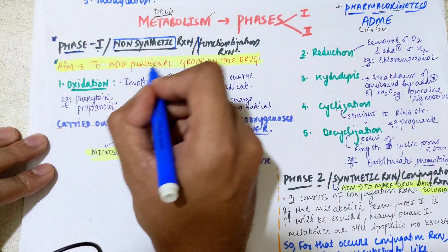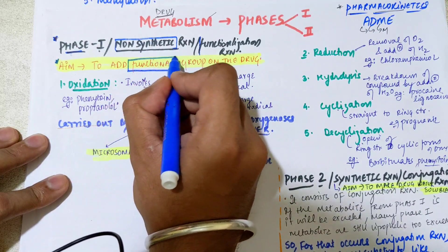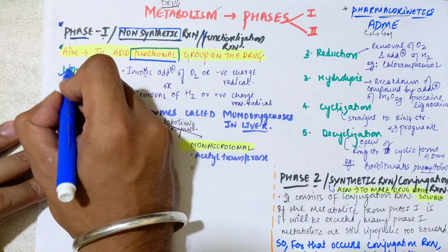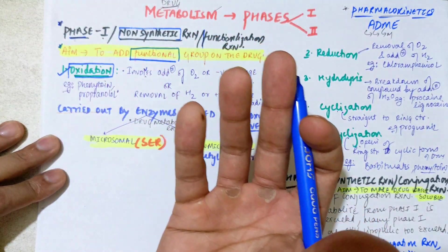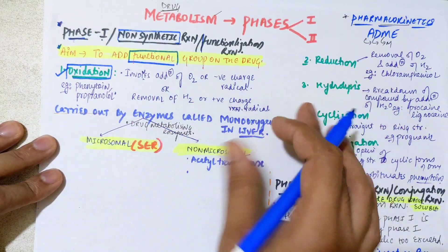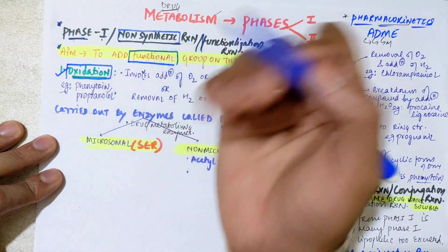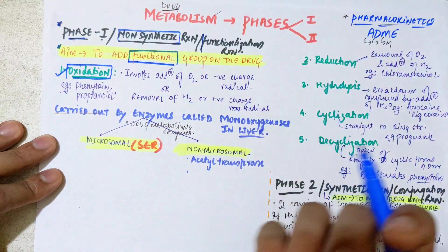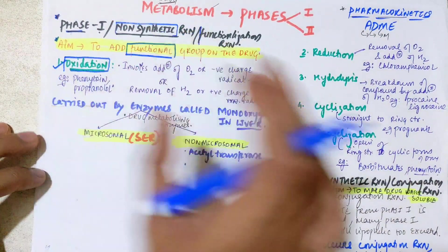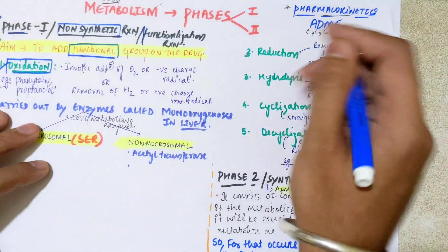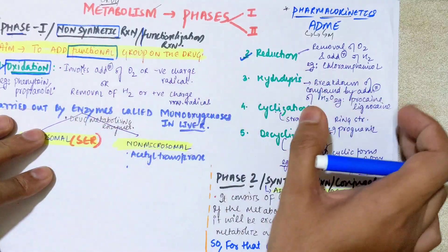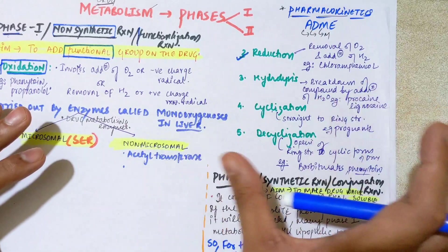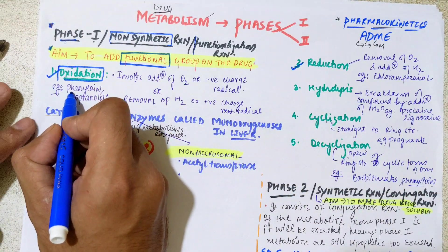So the aim of phase one, as stated, is to add a functional group on the drug — that is why it is also called the functionalization reaction. The processes in phase one include: first, oxidation — from chemistry basics, the addition of oxygen or removal of hydrogen, or in other terms, the addition or removal of charged radicals.